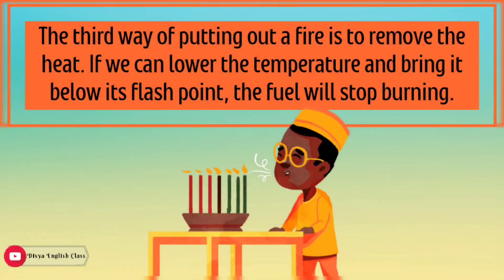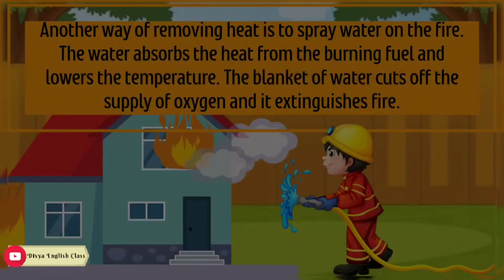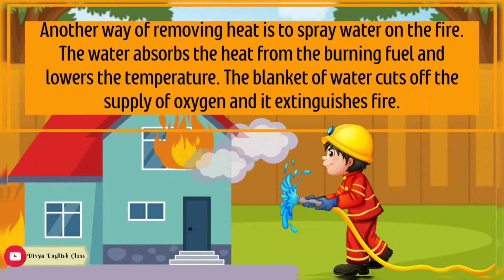The third way of putting out a fire is to remove the heat. If we can lower the temperature and bring it below its flashpoint, the fuel will stop burning. For example, we blow a burning matchstick or a candle to remove the hot air around the flame so that the temperature comes below the flashpoint and it gets extinguished. Another way of removing heat is to spray water on the fire. The water absorbs heat from the burning fuel, lowers the temperature, and the blanket of water also cuts off the supply of oxygen, thus extinguishing the fire.